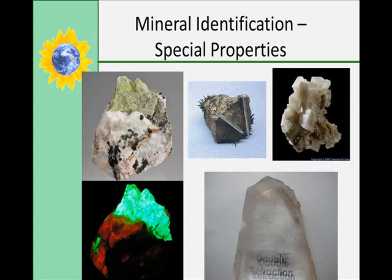Some minerals have special properties. Magnetite shows magnetism — you can see the nails attracted to it. Halite has a taste, and that's rock salt on the upper right. Calcite shows double refraction, and you can see how it splits and doubles up print as you look through it. Some minerals are phosphorescent — the mineral on the left shows under regular light and under black light that it glows. Phosphorescent minerals include willemite and sphalerite.